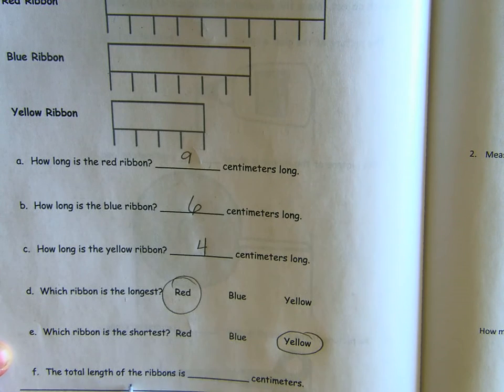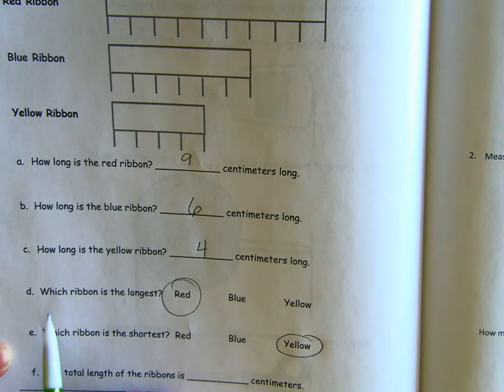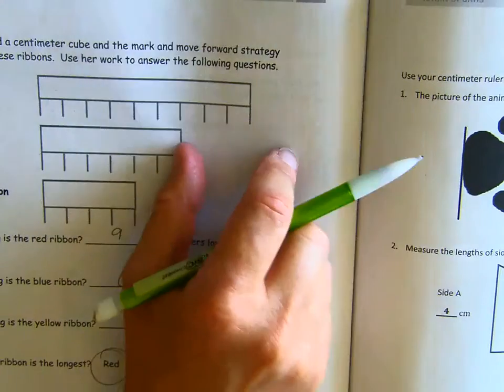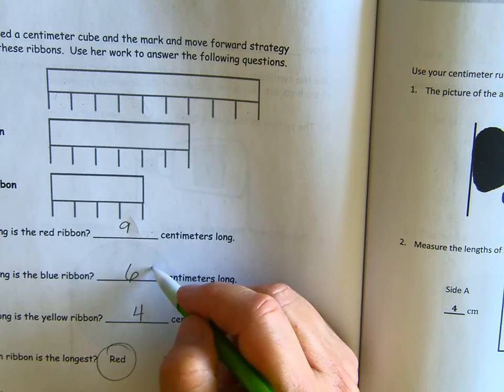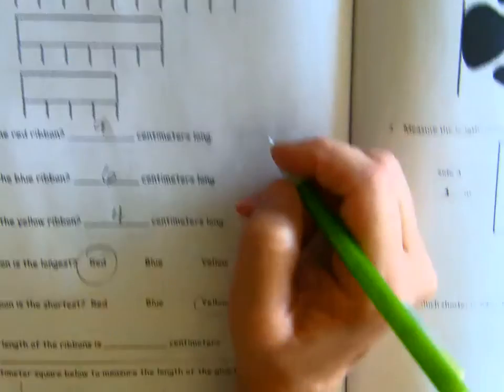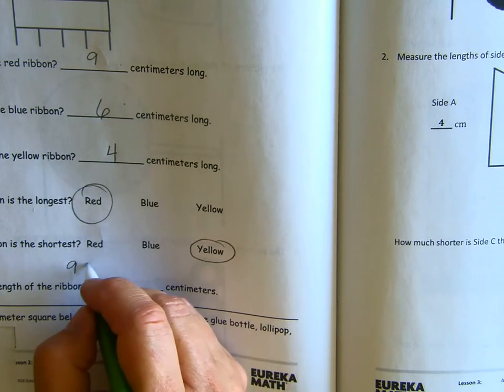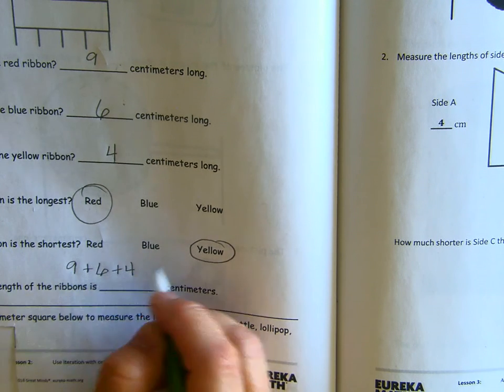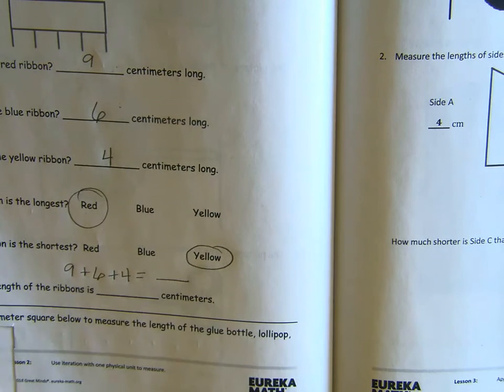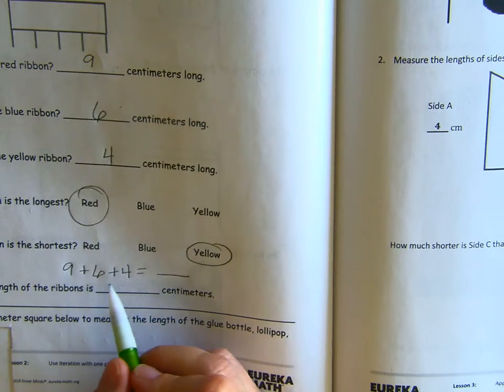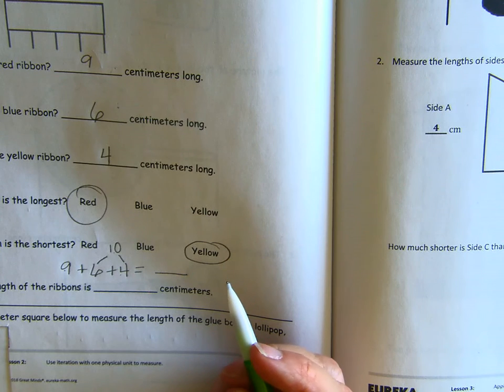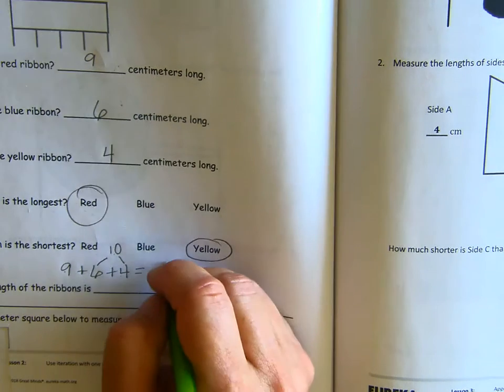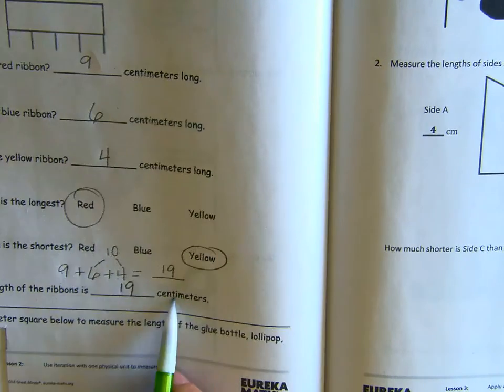The last one says the total length of the ribbons is. Total means like sum. If we put all the ribbons together, how much would it be? So, we need to add nine plus six plus four. So, I am going to write nine plus six plus four equals blank. Now, I know my number bonds to ten. Six and four is ten. So, I have nine plus ten. That's a much easier problem to solve. Nine plus ten is 19. So, the total length of the ribbons is 19 centimeters.